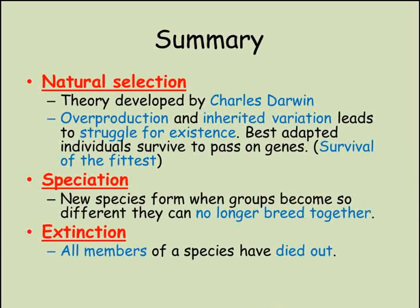So natural selection is the one idea that unites everything in biology. It allows us to explain why living things are the way they are, and how they become adapted to their environments. Charles Darwin came up with the theory of natural selection, having noticed that species overproduced and that individuals within the species show variation that was inherited. He said this led to a struggle for existence, with the best adapted individuals surviving, reproducing, and passing on the traits that made them successful to their offspring in the next generation. He called this survival of the fittest.